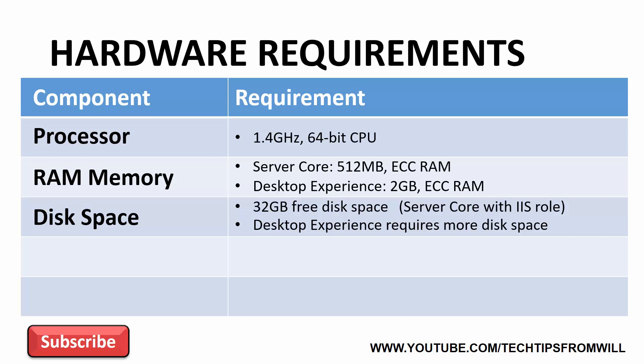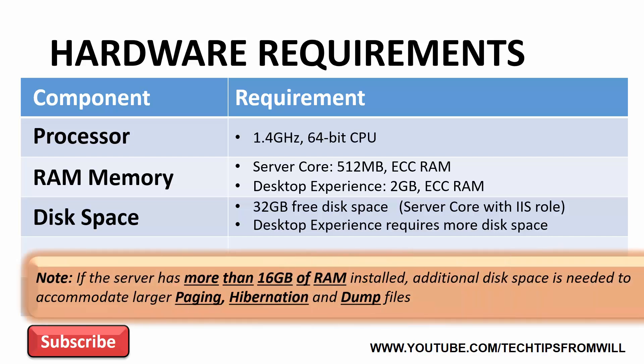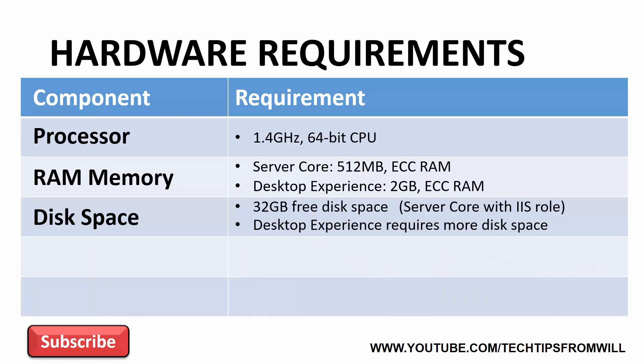Generally speaking, an installation of Windows Server 2016 with a server core interface is approximately 4 GB smaller than an installation with a desktop experience interface. Keep these figures in mind when choosing your preferred interface. Furthermore, if your server has more than 16 GB of RAM memory installed, Microsoft recommends allocating even more disk space. This additional space is necessary to accommodate larger paging, hibernation and dump files.